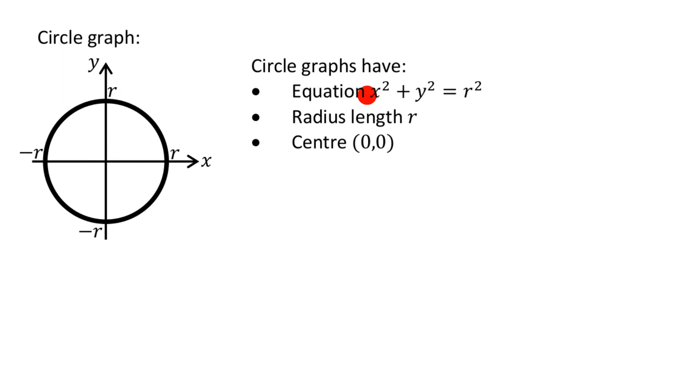So equations of a circle look like this. x squared plus y squared equals something squared. R is some number, a fixed number, that is.